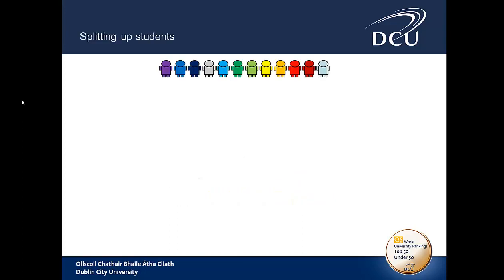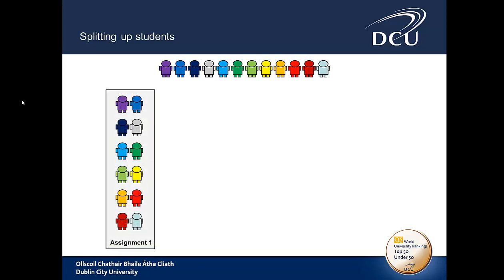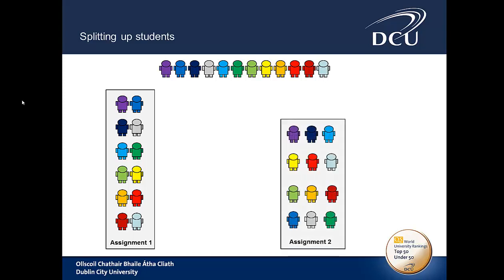The example I used in a previous screencast is a class with 12 students. For the first assignment we want them to do it in pairs and the second assignment we want them to do it in threes. As you will see it's different students paired up on each occasion.